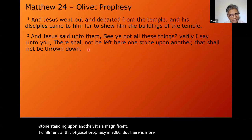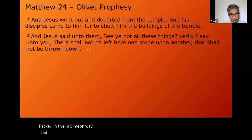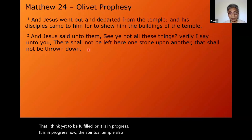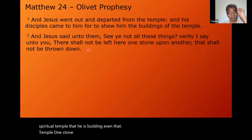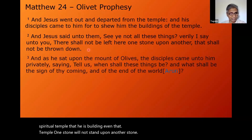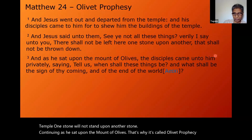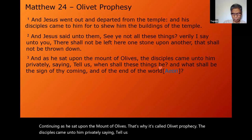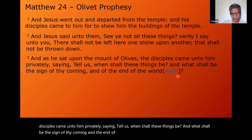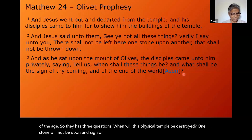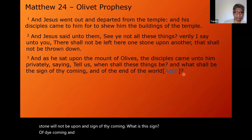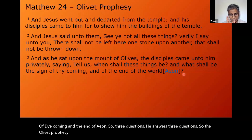But there is more packed in this in a semeion way — yet to be fulfilled or in progress now. We are called living stones of that spiritual temple he is building. Even that temple: one stone will not stand upon another stone. As he sat upon the Mount of Olives — that's why it's called the Olivet Prophecy — the disciples came to him privately saying, 'Tell us when shall these things be, and what shall be the sign of thy coming and the end of the age?' They asked three questions, and the Olivet Prophecy is a response to those three questions.